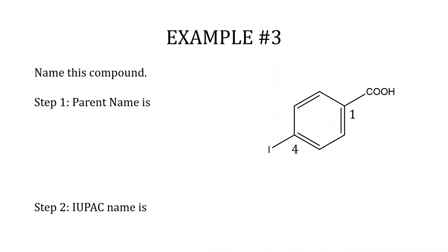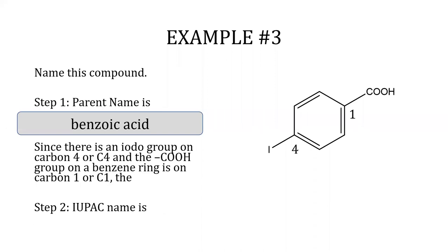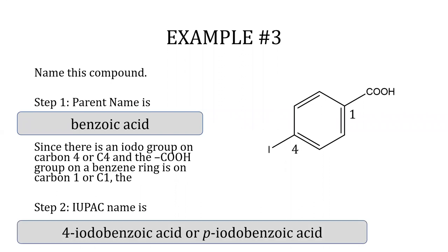Example three has a parent of benzoic acid. There is an iodine group on carbon four (C4) and the COOH group on the benzene ring is on carbon one (C1). The IUPAC name is 4-iodobenzoic acid, or by its common name, para-iodobenzoic acid.